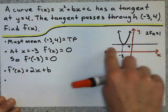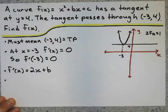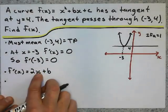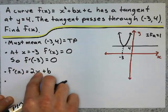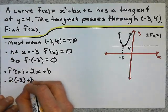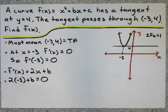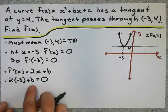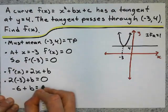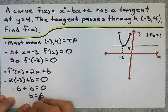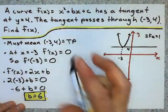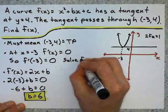Next step is using this information: at x equals negative 3, the gradient is 0 — a flat horizontal line. So I'm going to substitute into the derivative equation. When x equals negative 3, f prime equals 0. So 2 times negative 3 plus b equals 0. I can solve for that b coefficient right here. I get negative 6 plus b equals 0, so b must equal positive 6.